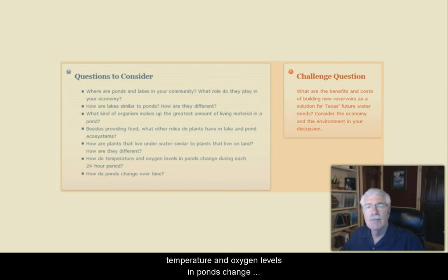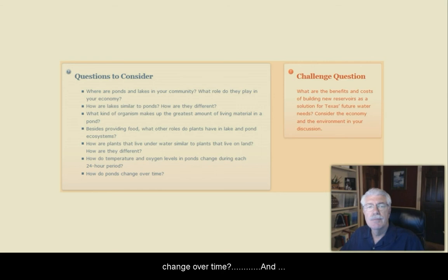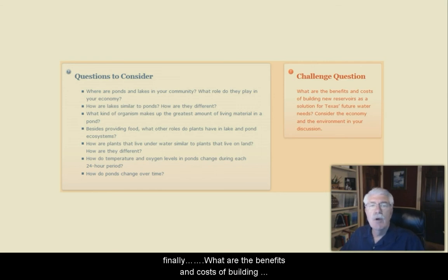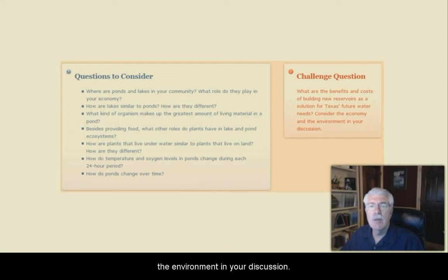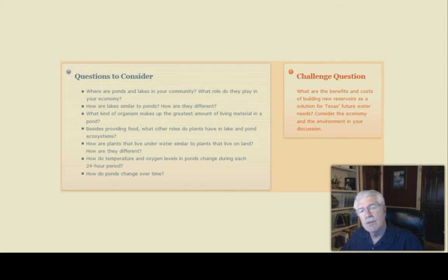How are plants that live underwater similar to plants that live on land, and how are they different? How do temperature and oxygen levels in ponds change during each 24-hour period? How do ponds change over time? And finally, what are the benefits and costs of building new reservoirs as a solution for Texas' future water needs? Consider the economy and the environment in your thinking about that answer.